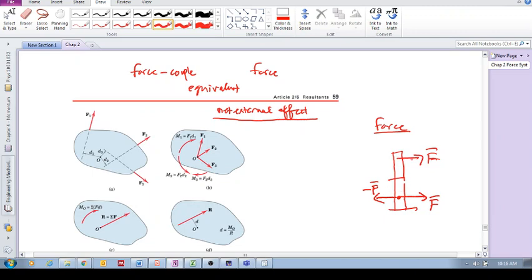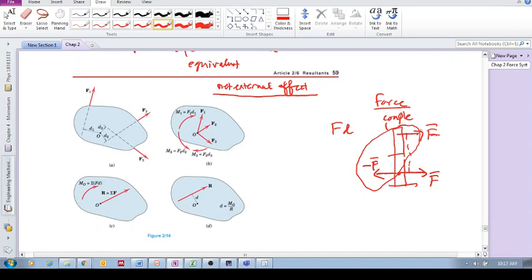This is now a couple, and this couple is equal to f times d, which is that perpendicular distance between them. So now we've replaced this original system with an equivalent system of a force there and a clockwise couple moment equal to f*d.